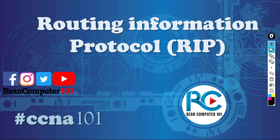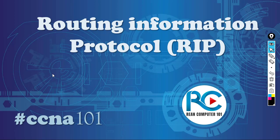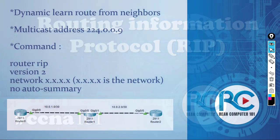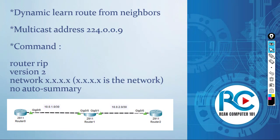Have you guys ever heard about the Routing Information Protocol, which is abbreviated as RIP? Today I'm going to present what it is. It is the routing information protocol that dynamically learns the route from its neighbor. The automatic multicast address is 224.0.0.9.